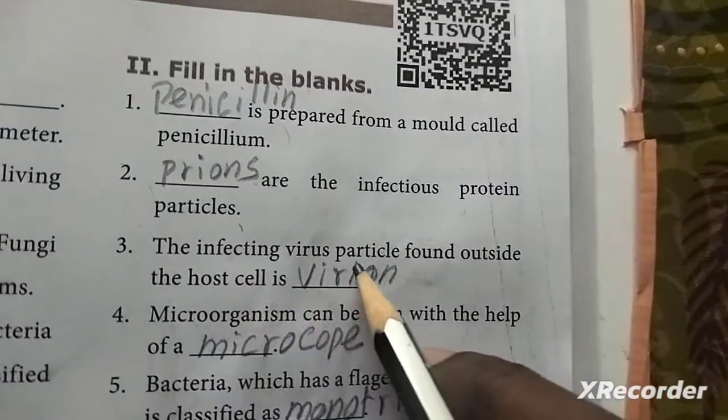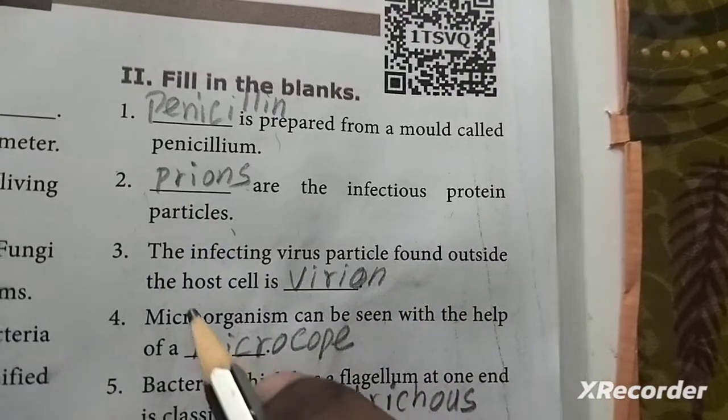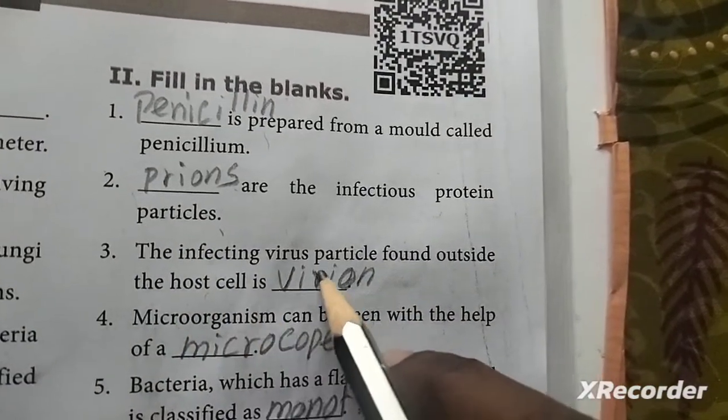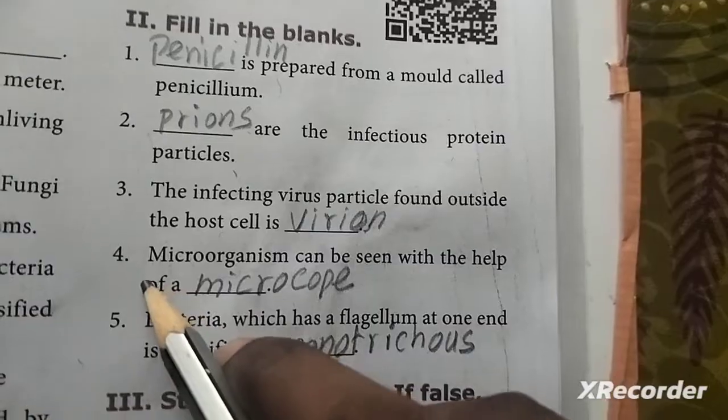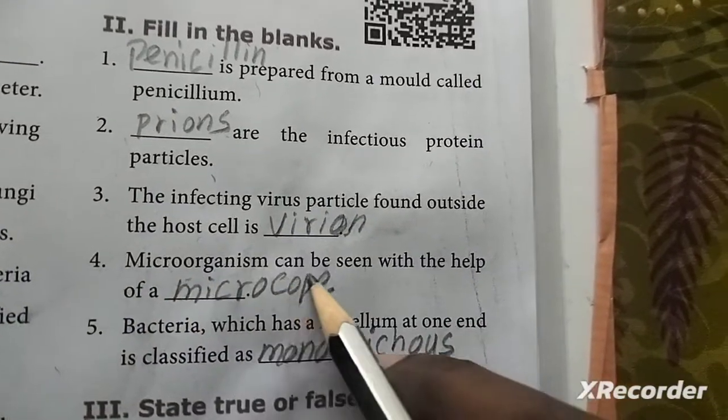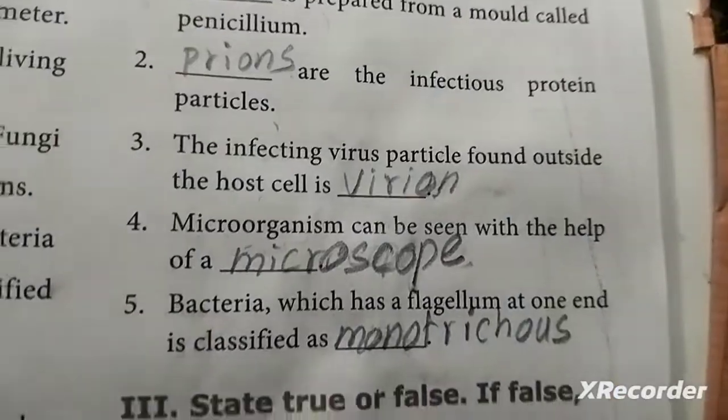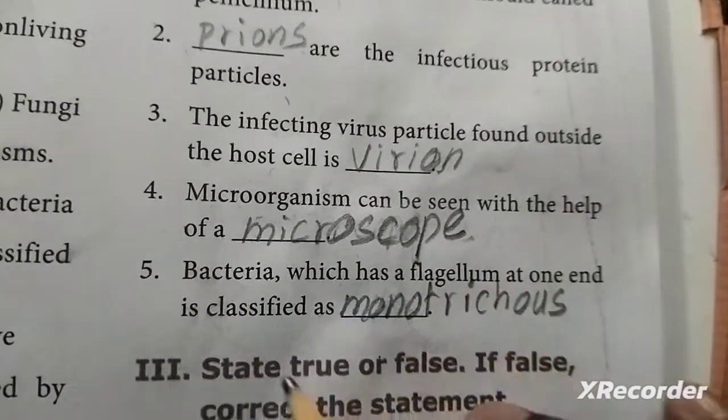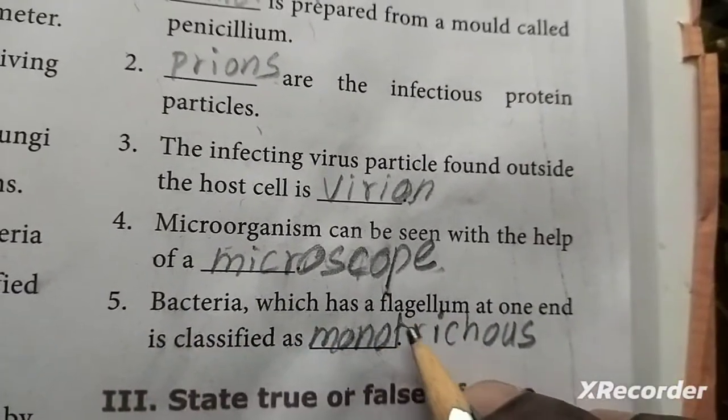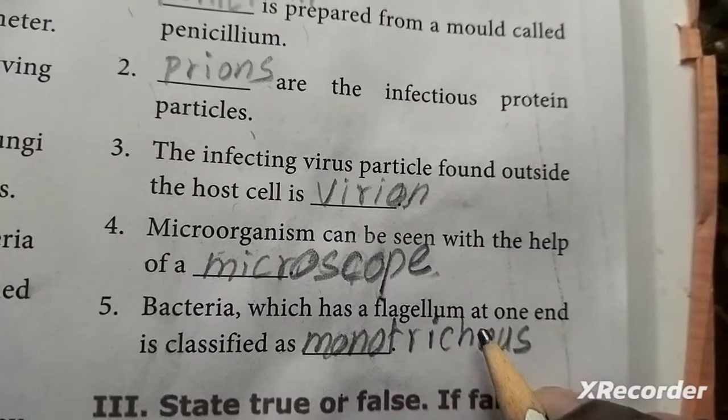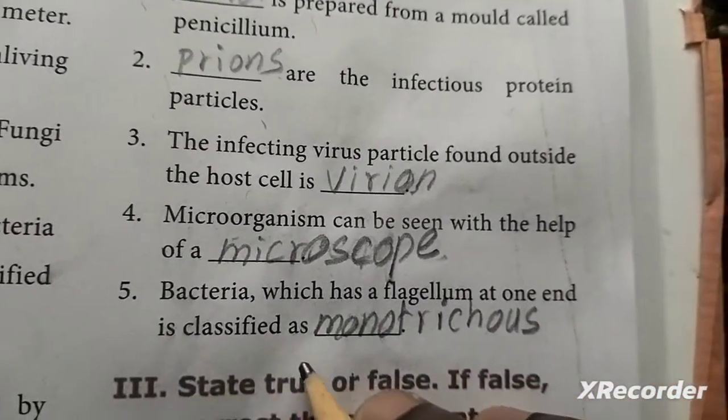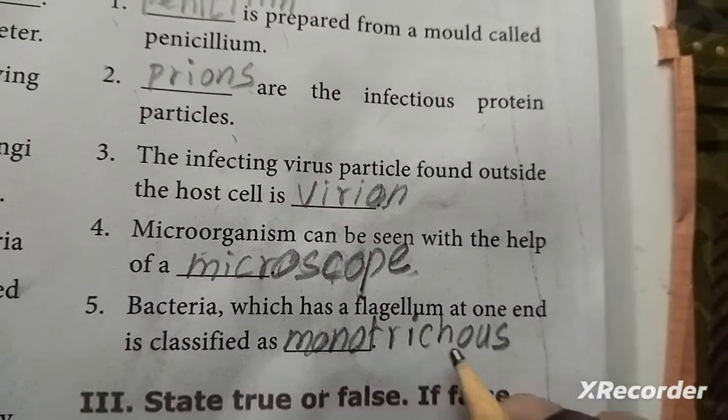Third: the infecting virus particle found outside the host cell is virion. Fourth: microorganism can be seen with the help of a microscope. Fifth: bacteria which has a flagellum at one end is classified as monotrichous.